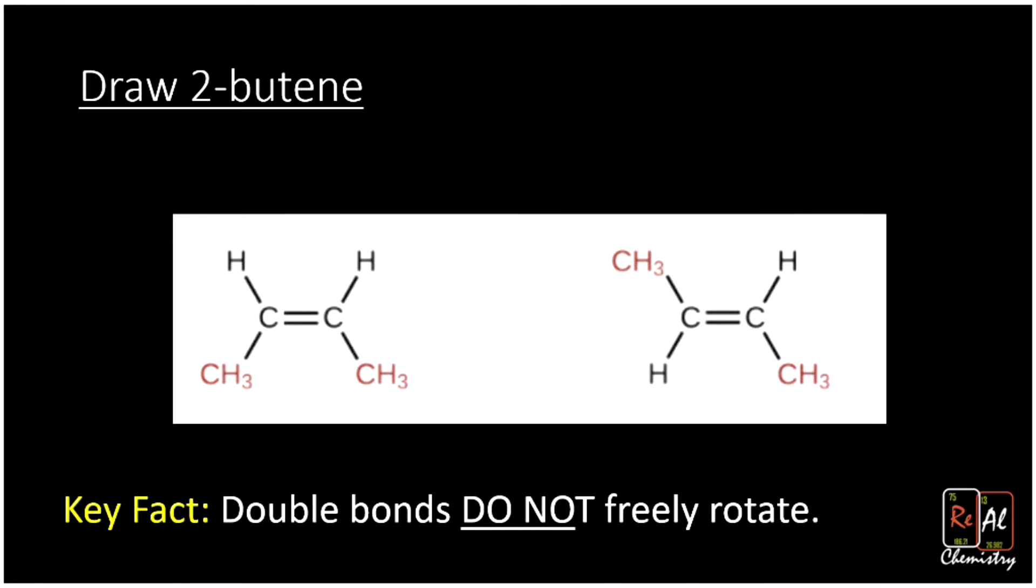So here we have the same structures I just drew, but in expanded form. And this double bond doesn't rotate. So since it doesn't rotate, those are different structures. And it turns out we give them slightly different names because of that. If these groups that aren't hydrogen are on the same side, we call that cis. If they're on the opposite side of the double bond, we call that trans.